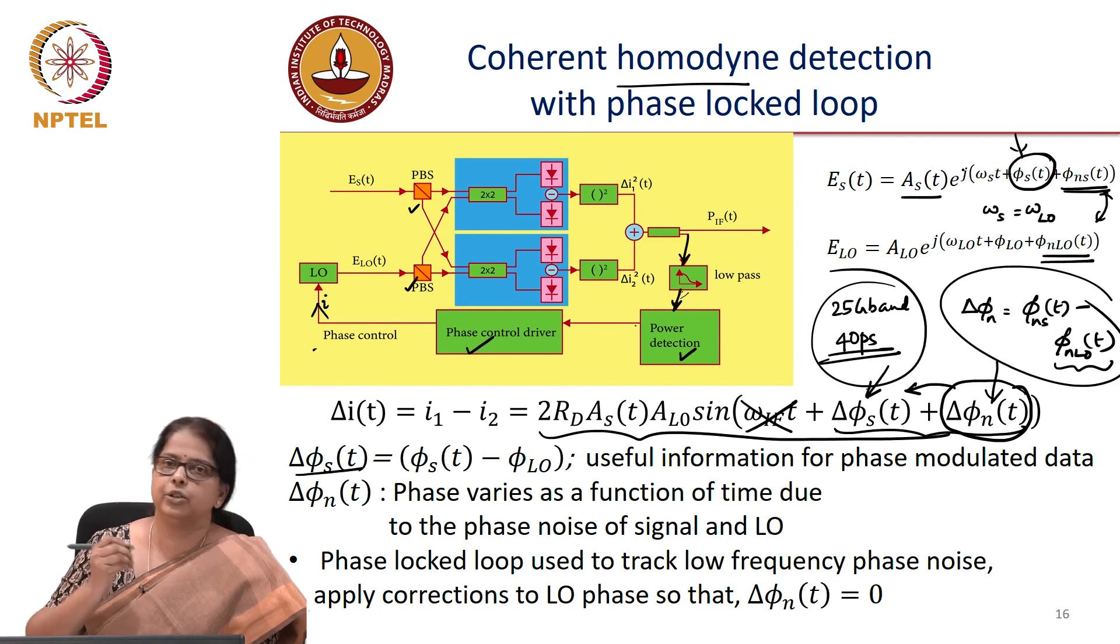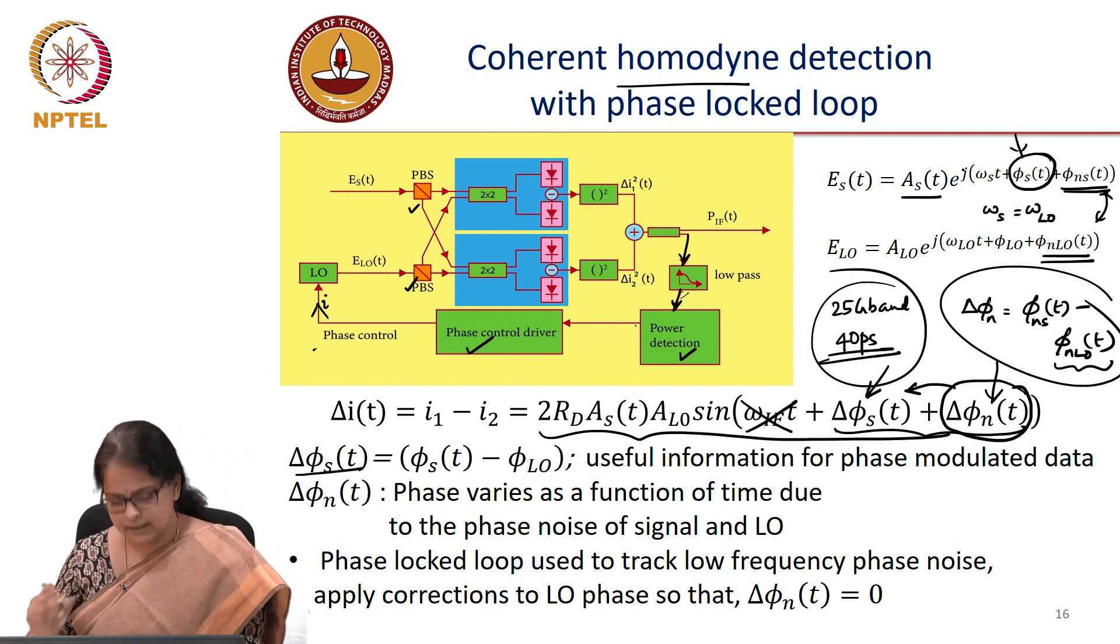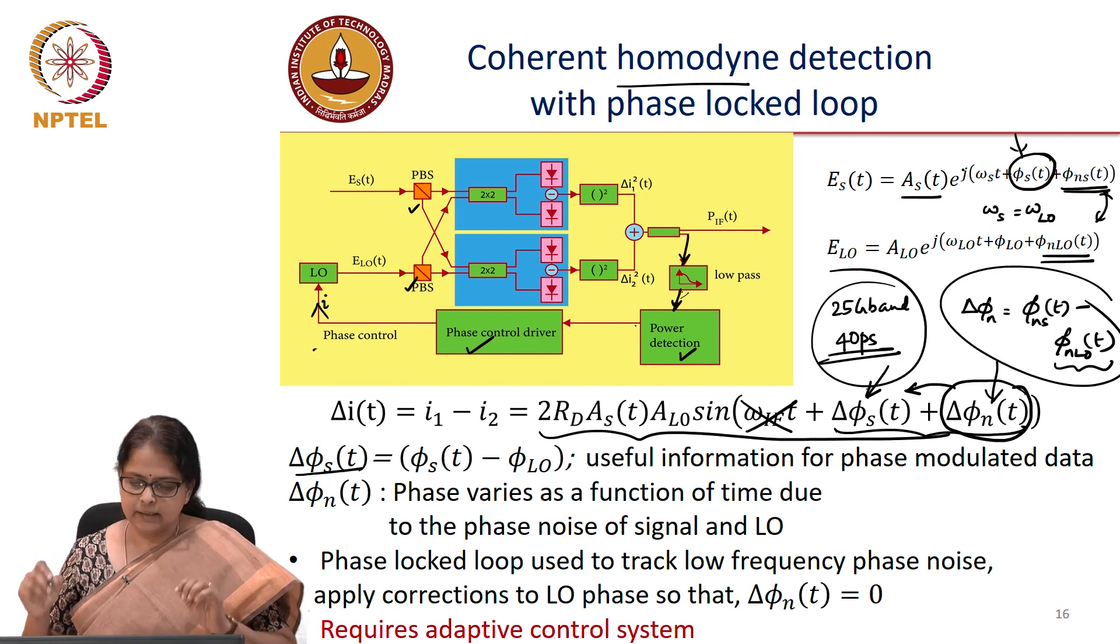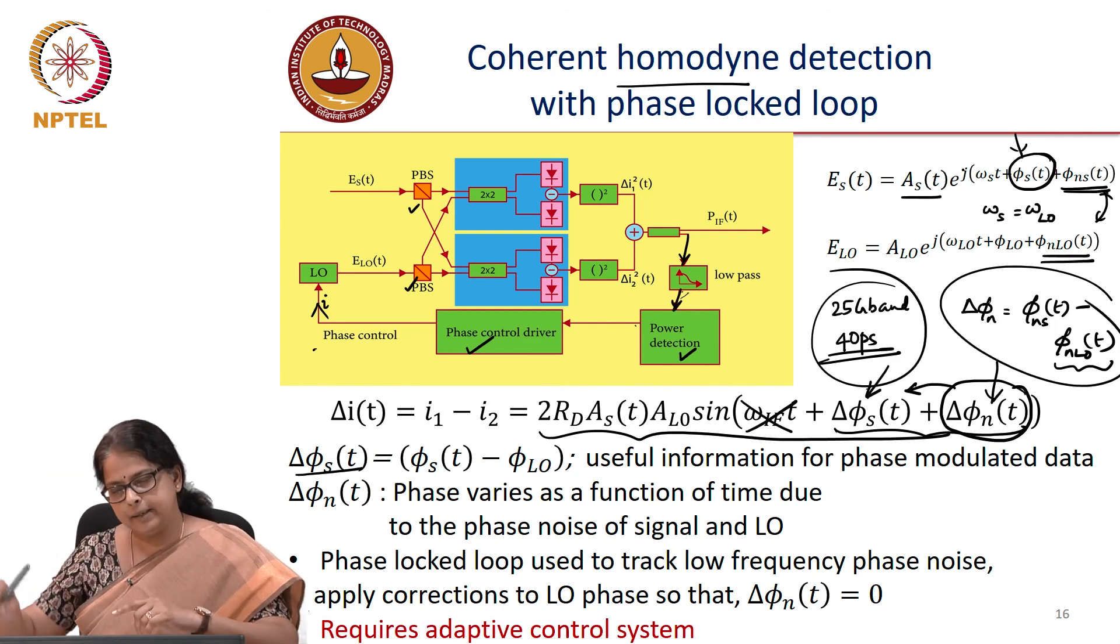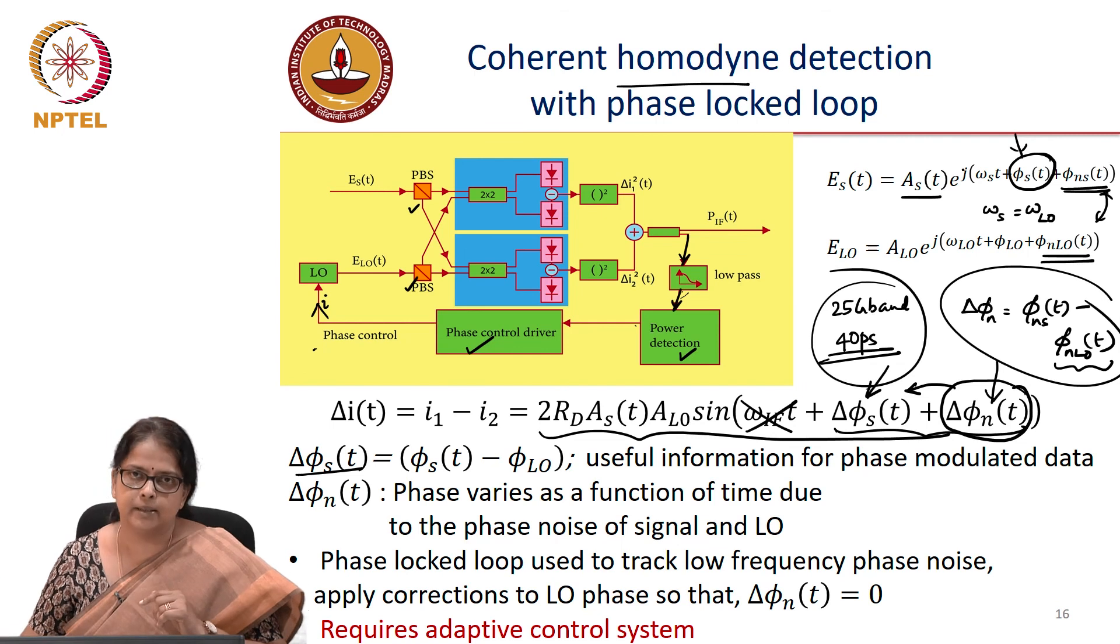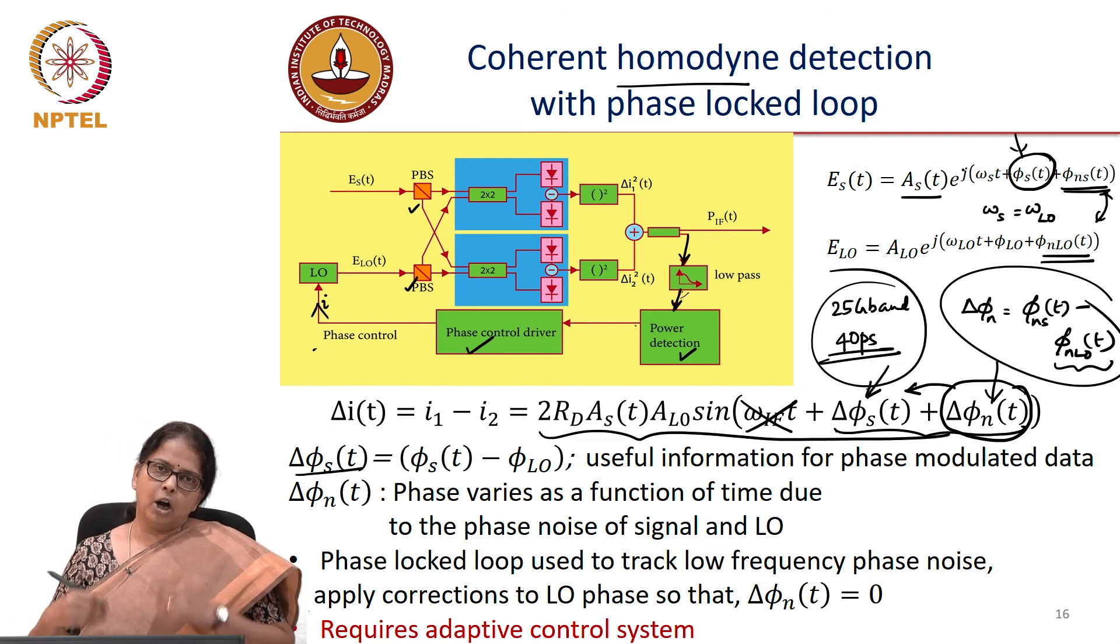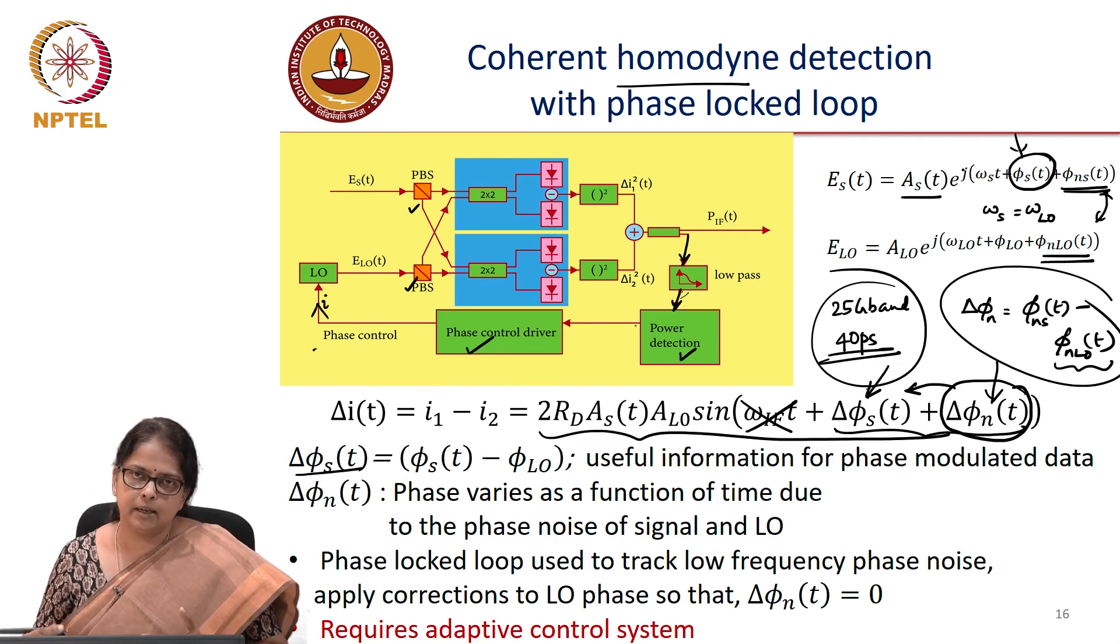This is the electronic feedback loop. It gets little complicated and it actually requires a complete adaptive control system. So the alternative would be to do this in an optical manner.